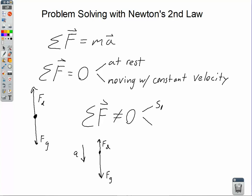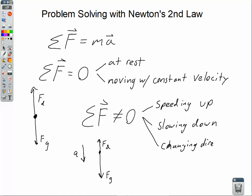If there is an acceleration, we have two main choices: either it's speeding up or it's slowing down. There's also a third flavor of acceleration — it could be changing direction, because a change in direction is a change in the velocity vector, and acceleration is defined as change in velocity over time. We're going to focus on speeding up or slowing down for right now.